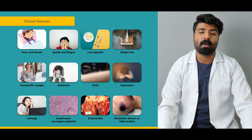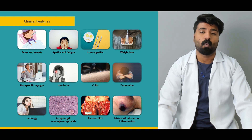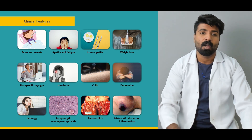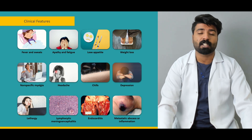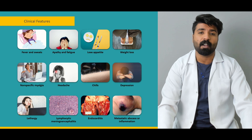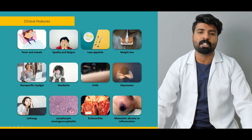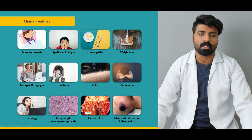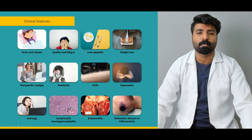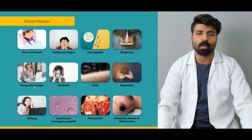Next, once we know about its origin, mode of transmission, and which different organs it manifests in, we're going to talk about the clinical features. Most of these clinical features will come from those organs being affected. In particular, we're going to discuss how endocarditis and lymphocytic meningoencephalitis are related to brucellosis.